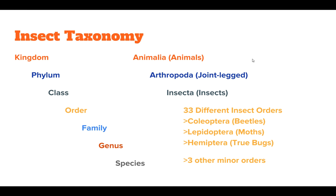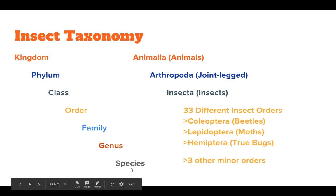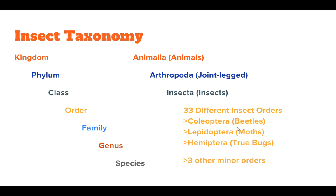Under class Insecta there are 33 different orders of insects. Here we're going to be focusing on three, and there are three others — which means y'all got lucky and there are 27 you don't have to know. As we go through, I'll talk about whether each insect is its own species or a group of insects. A lot of these will be down to the family and genus levels, not just the species level. The three orders we're focusing on are the beetles, the moths, and the true bugs.